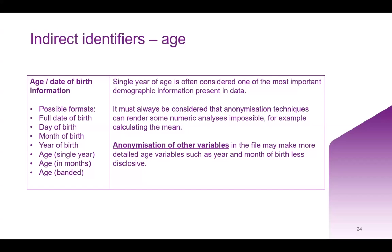Age is often considered one of the most important pieces of demographic information in data. It provides precise insights into age-related trends and patterns, which are critical for many types of analyses. When handling age or date of birth information, it's crucial to consider the various formats and their implications for the privacy of the individual and data utility. The information can be presented as the full date of birth, day, month, year of birth, age as a single year, age in months, or a banded category.